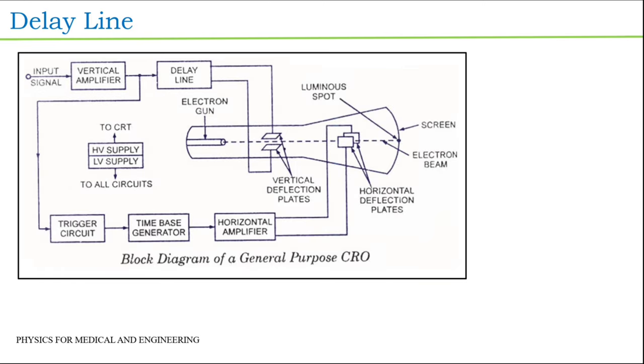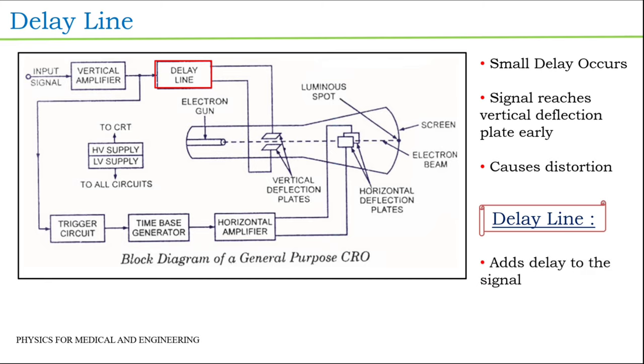The next block is the delay line. We know that the input signal is applied to the horizontal as well as the vertical deflection plate. But before reaching the horizontal deflection plate, the signal passes through different blocks such as trigger circuit, time base generator, and horizontal amplifier. Thus a small delay occurs and the signal reaches the vertical deflection plate before the horizontal plates, and this causes distortion of the signal on the screen. To avoid this situation, a small amount of delay is added using the delay line block after the vertical amplifier.